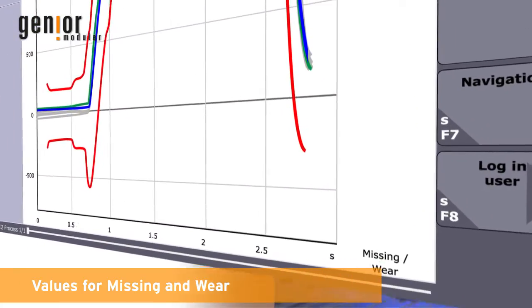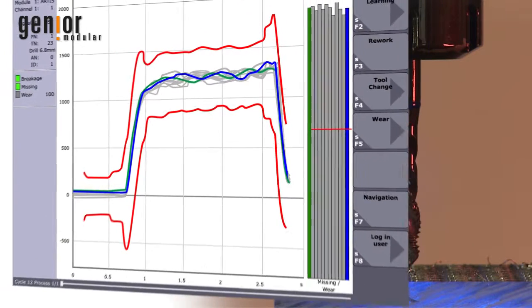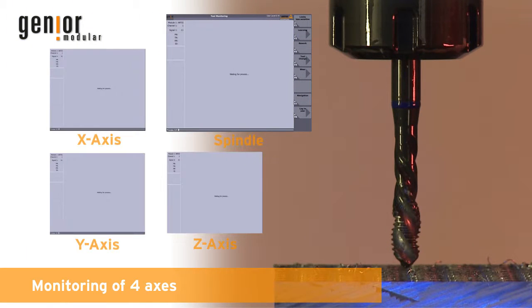An additional evaluation of spindle data for missing tool or wear. Genia Modular monitors several axes simultaneously.